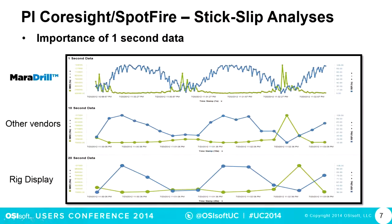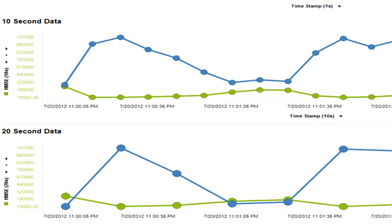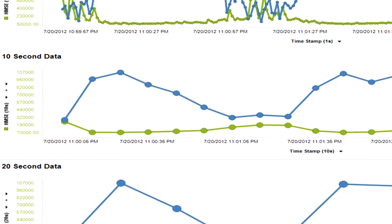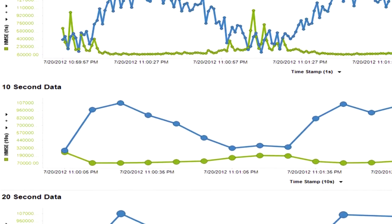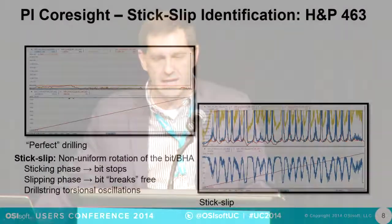One of the things we realized when we were doing Mirror Drill is it's really important to get either one-second or sub-second data. Through Mirror Drill and through Coresight, we're able to see one-second data and sub-second data. So you can see by the three trends, you're getting a lot more good data to look at. You can recognize problems a lot better when you're getting one-second data.